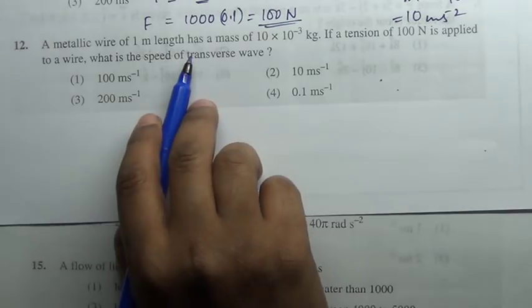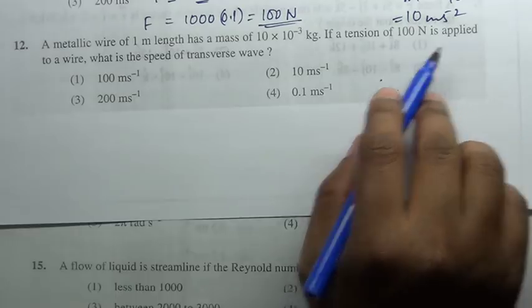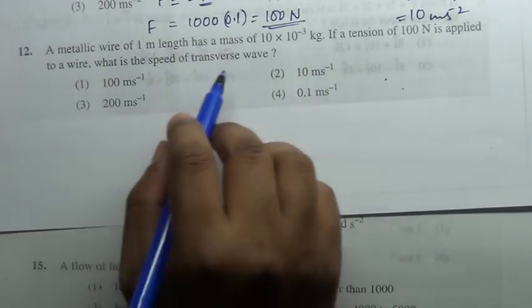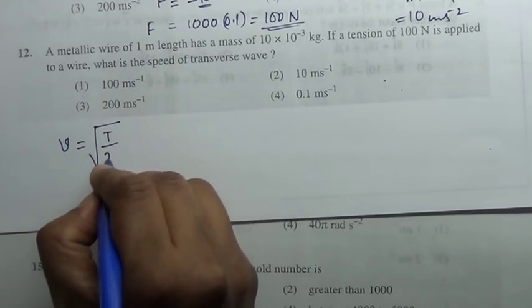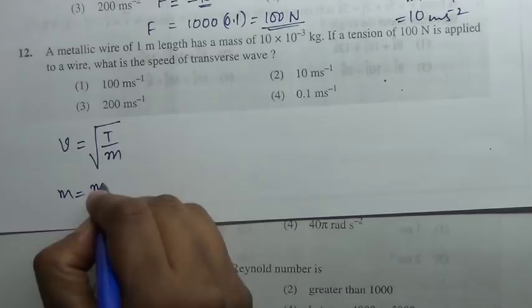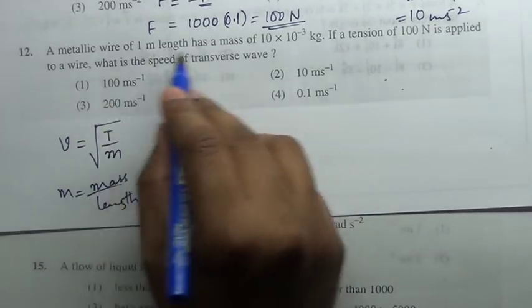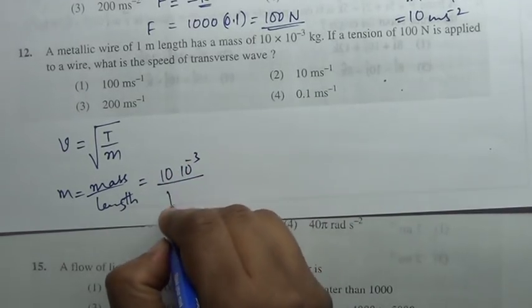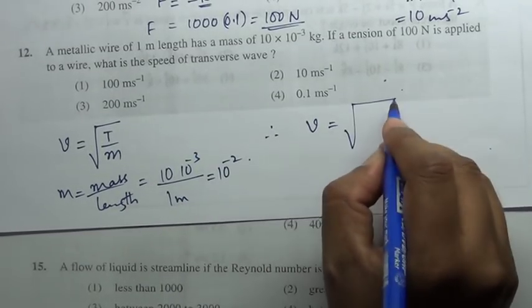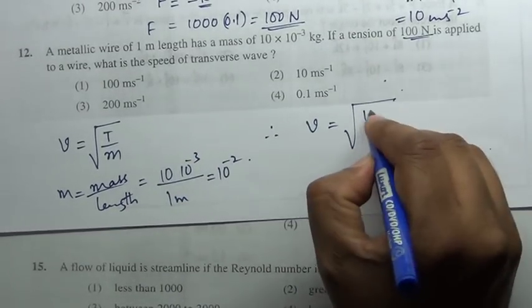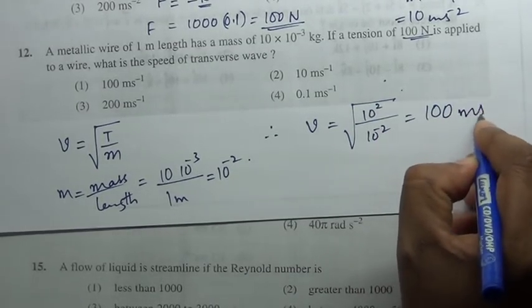A metal wire of length 1 meter has a mass given. If tension is applied to the wire, what is the speed of transverse wave? Speed of transverse wave is given by square root of T by m, where m is mass by length, called mass per unit length. Mass of the wire is 10 into 10 power minus 3, length is 1 meter, which is 10 power minus 2. Therefore speed equal to square root of tension 100 by 10 power minus 2, so it is 100 meter per second.